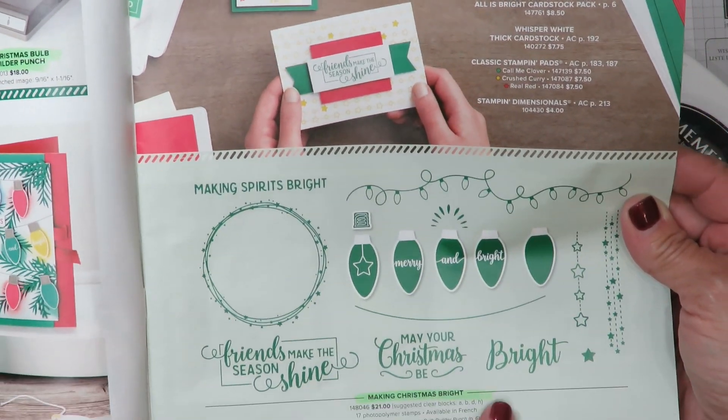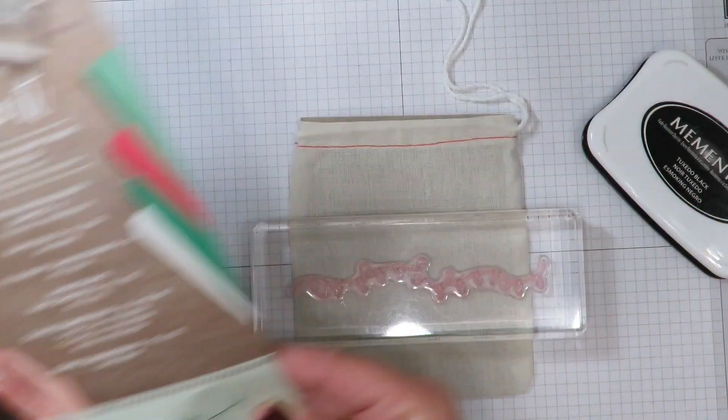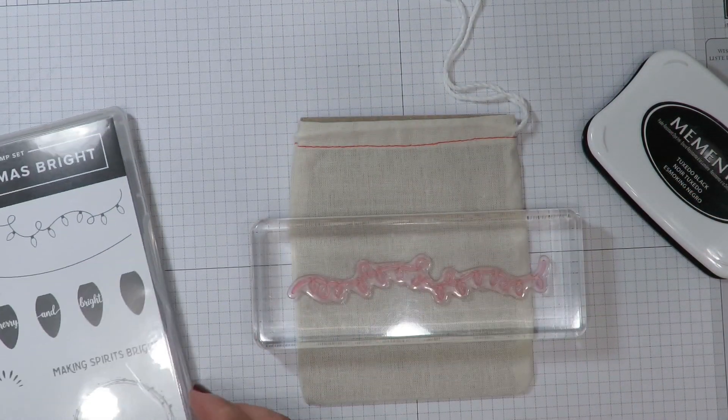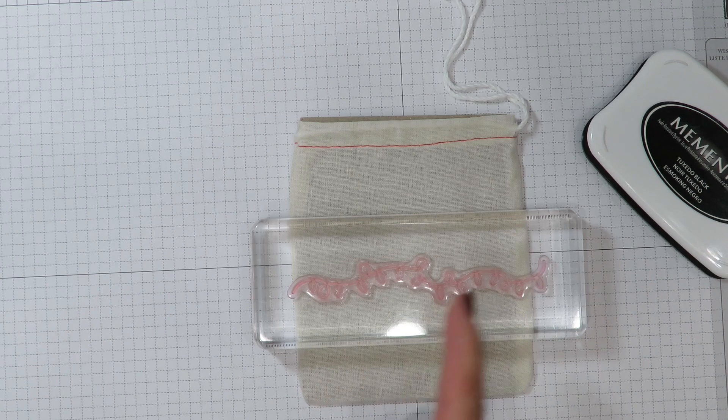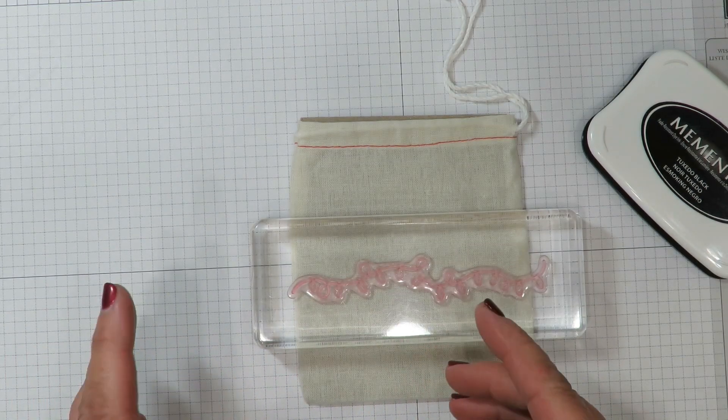The great thing about this stamp set is it also has a coordinating Christmas bulb punch to punch out those adorable light bulb images. Today we're going to be using the stamp set as it is. Keep in mind that if you want to buy the punch and the stamp set together that's considered a bundle and it'll save you ten percent.